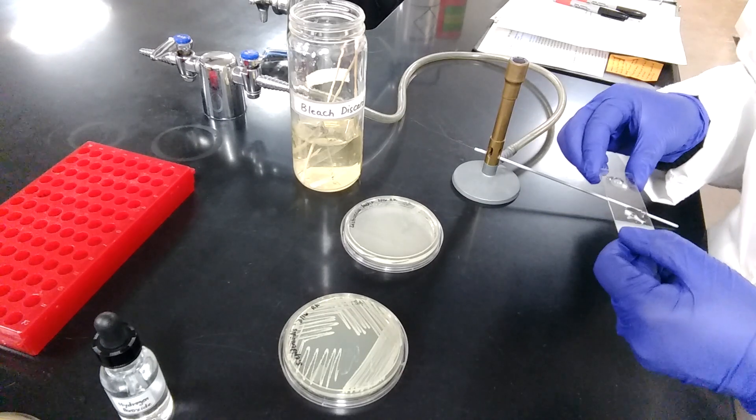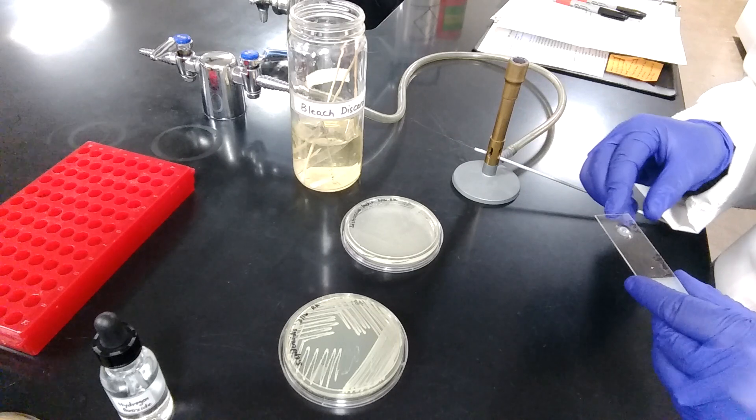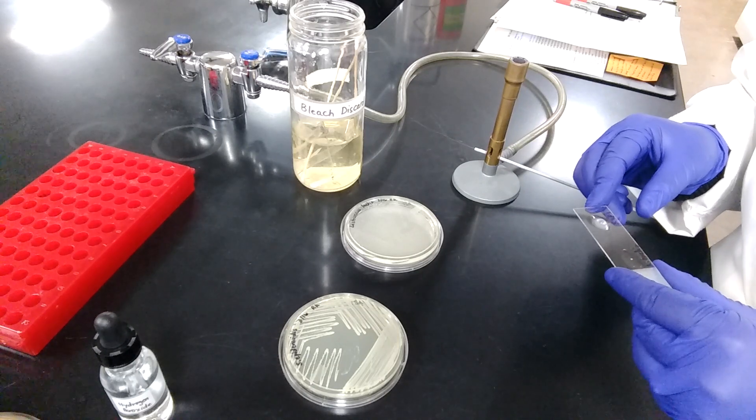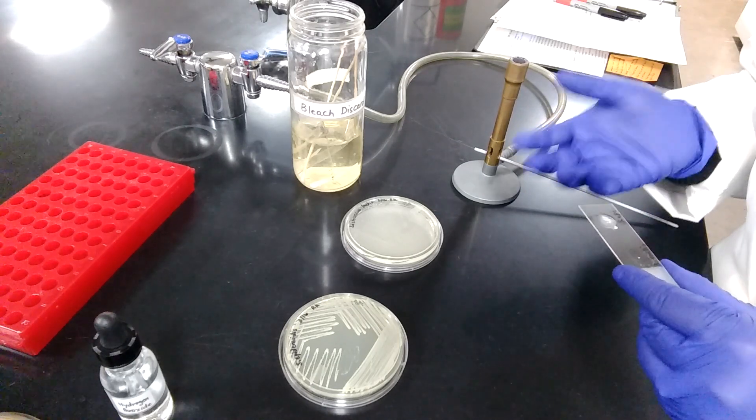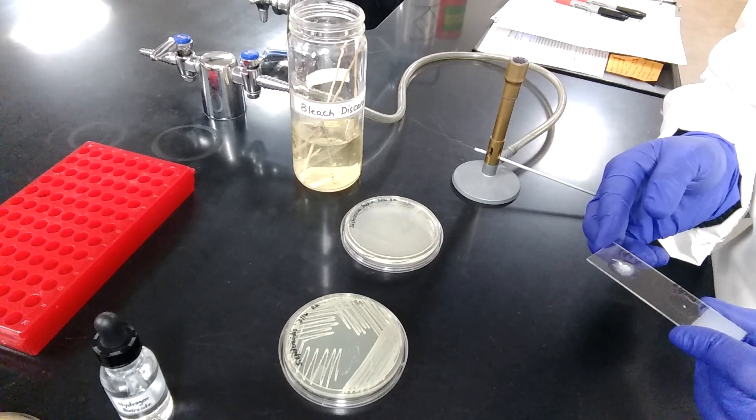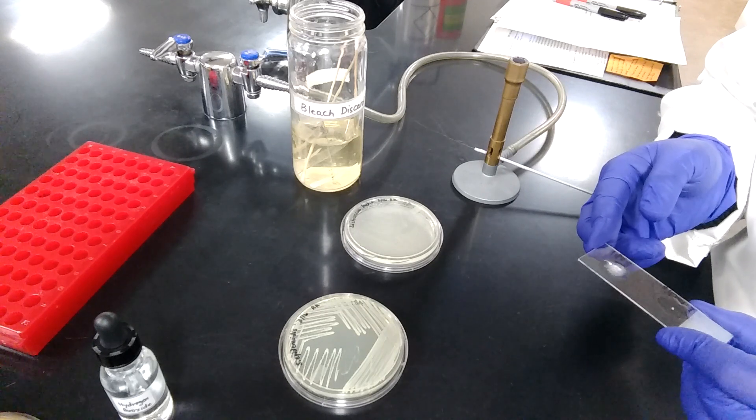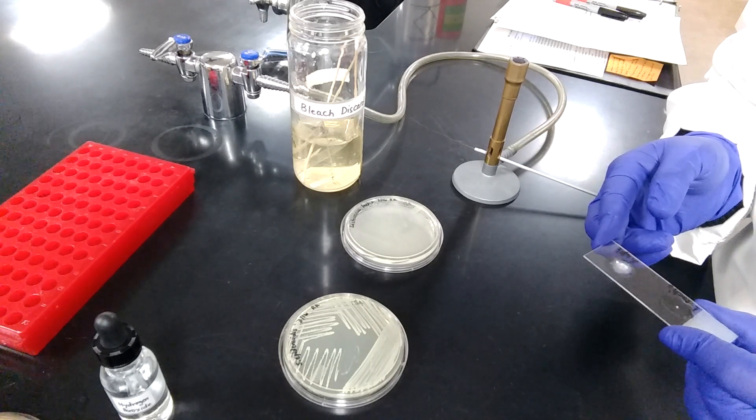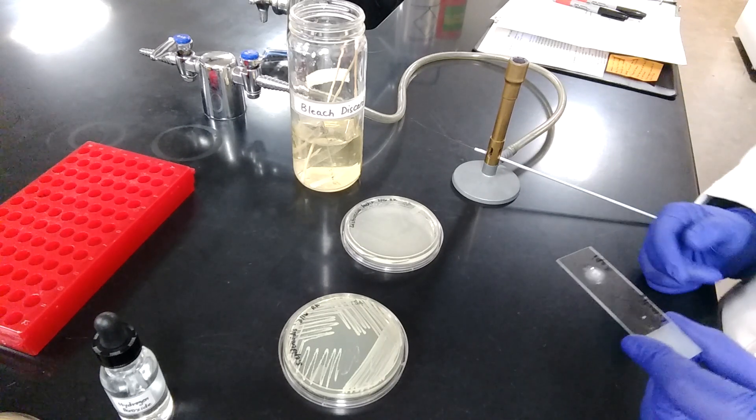When the bacteria produce the enzyme catalase, they will break down hydrogen peroxide into water and oxygen bubbles. The bubbles of oxygen is the visible result that you're seeing here. The bubbles indicate that oxygen is being produced by breaking down hydrogen peroxide with the help of enzyme catalase.